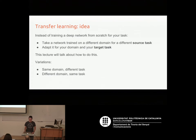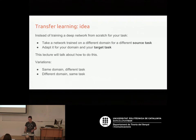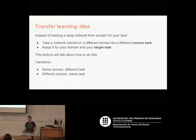The idea with transfer learning is that instead of training a deep network from scratch for your task, you take a network trained on a different domain — or sometimes the same domain; by domain I mean the types of images it can see — and then you use it for a different target task. As an example, you might have something trained on ImageNet and reuse it on something like Pascal VOC.